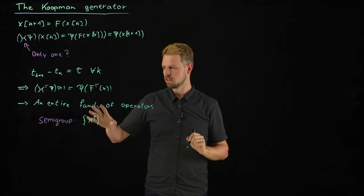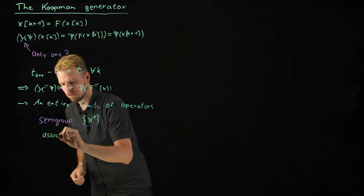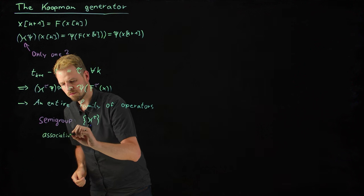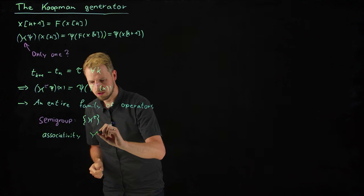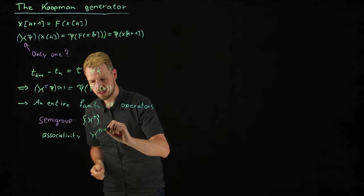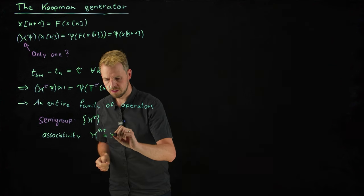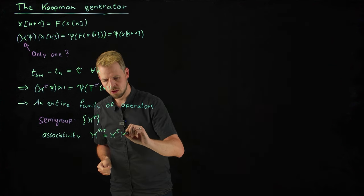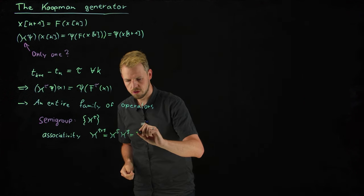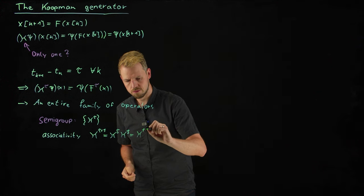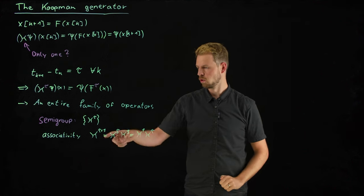That means that we can compose different time steps. So if we were to choose two time steps and advance tau plus rho, then this is the same as composing both of these time steps and independent of the order. This is what we would call a semigroup property, associativity.